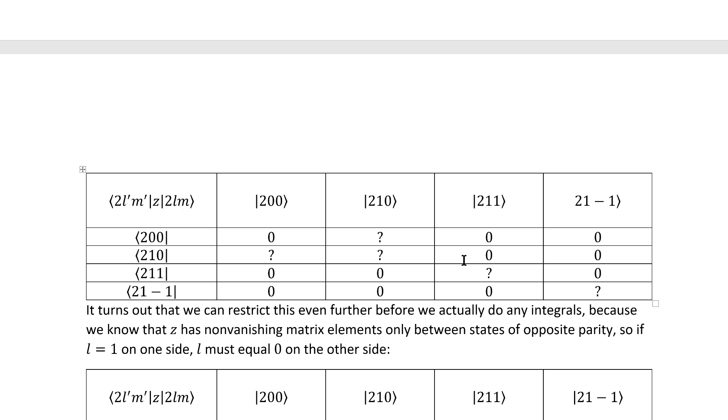Fortunately, we don't have to directly compute five matrix elements, because it turns out we can restrict this even further by remembering that z will only have non-vanishing matrix elements between states of opposite parity.